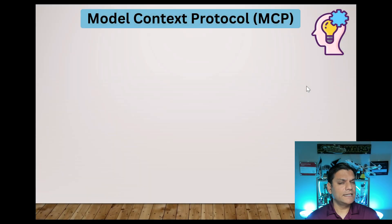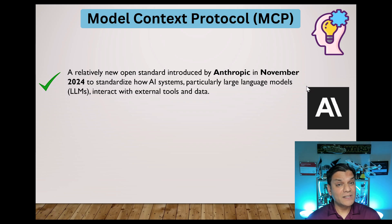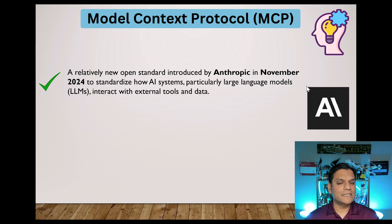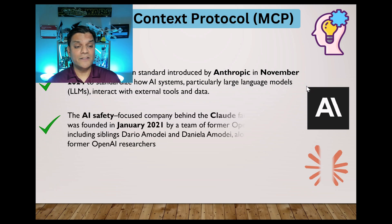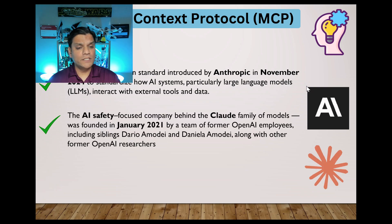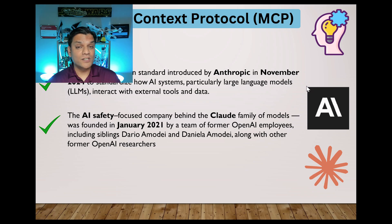Before we jump into the technical side, let's take a path down the history of MCP. It's actually not that old — it's a relatively new standard which was introduced by a company called Anthropic in November of 2024. Their whole purpose was to standardize how AI systems, specifically those which have large language models, interact with external tools and data. Anthropic itself is an AI-first company, founded back in January of 2021, and they are most commonly known for their Claude language models. The team that built this are actually former employees of OpenAI.